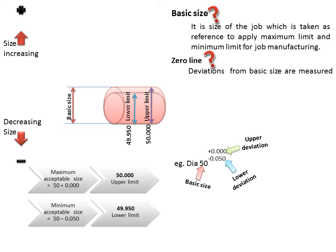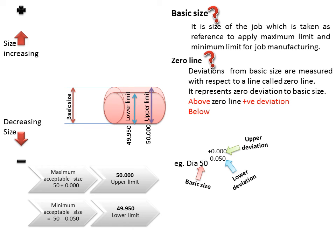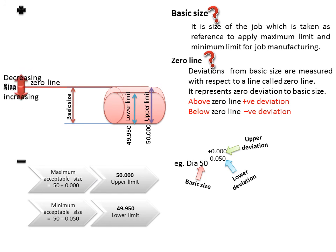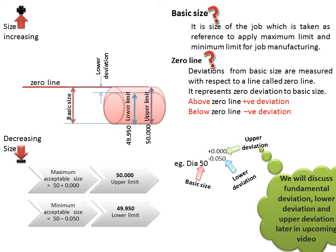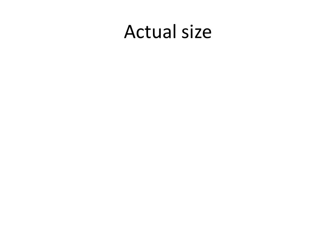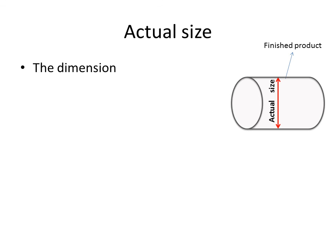Zero line: deviations from basic size are measured with respect to a line called the zero line. It represents zero deviation from basic size. Above the zero line is positive deviation and below is negative deviation. The lower deviation is below the zero line as it is negative, and the upper deviation is zero, so it coincides with the zero line.